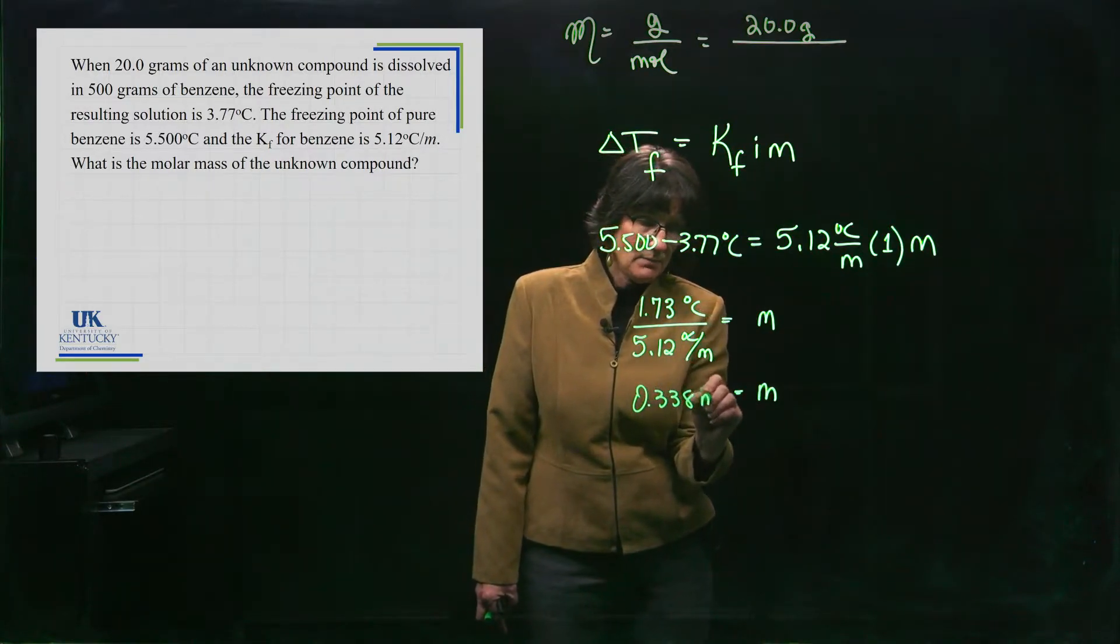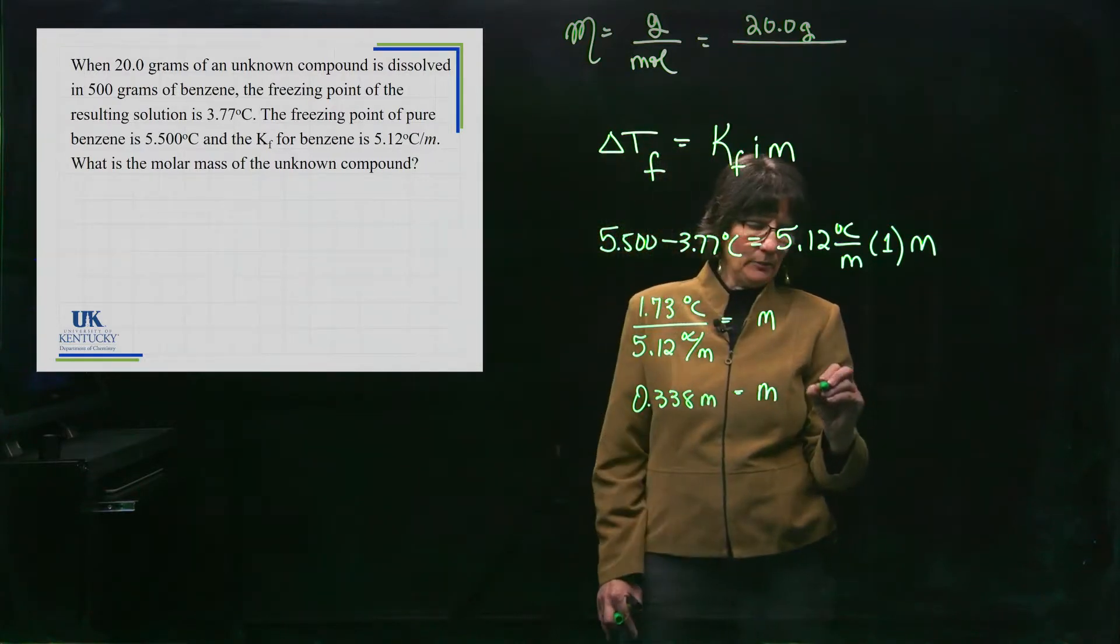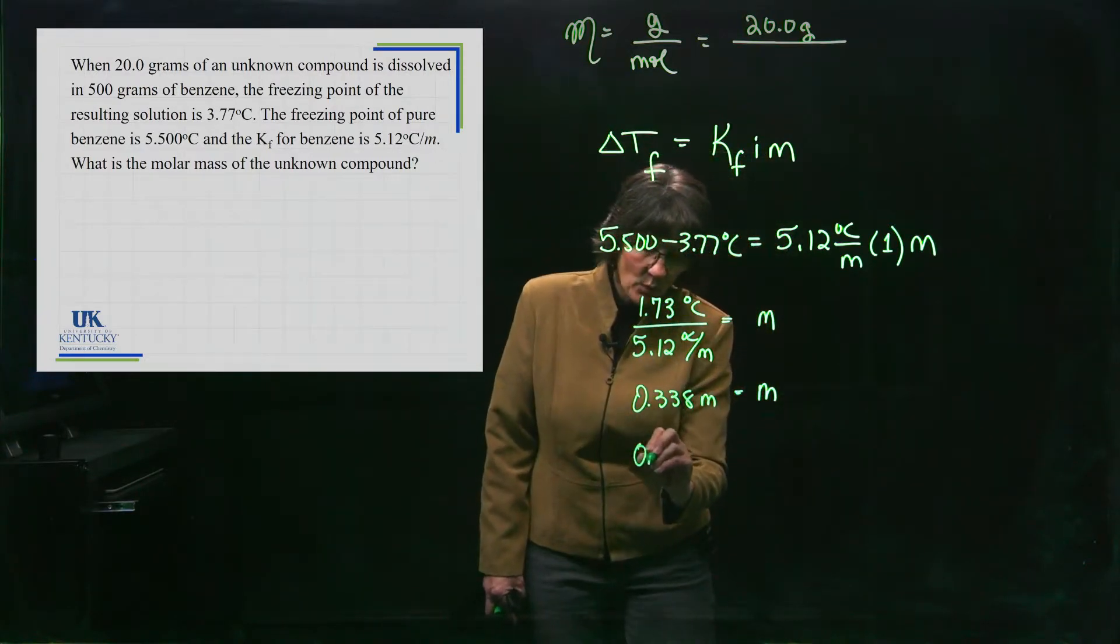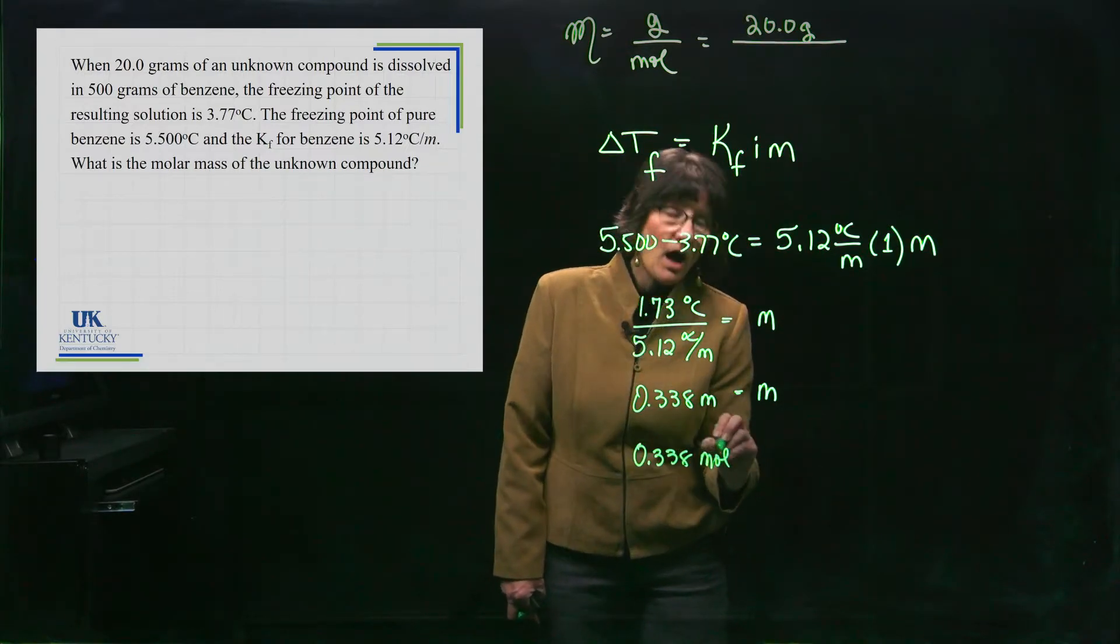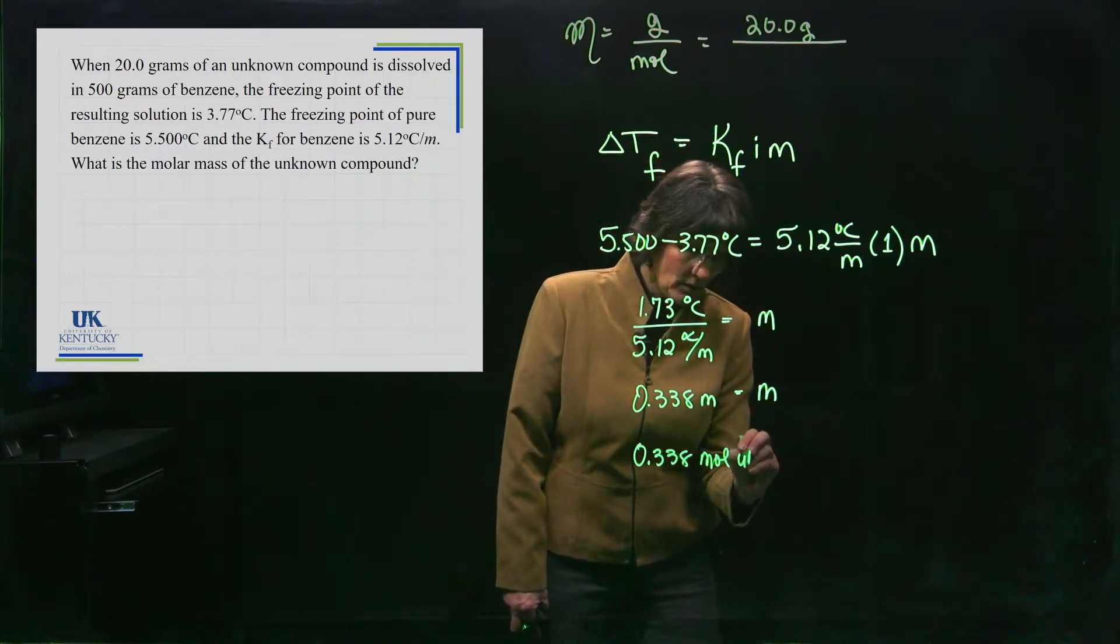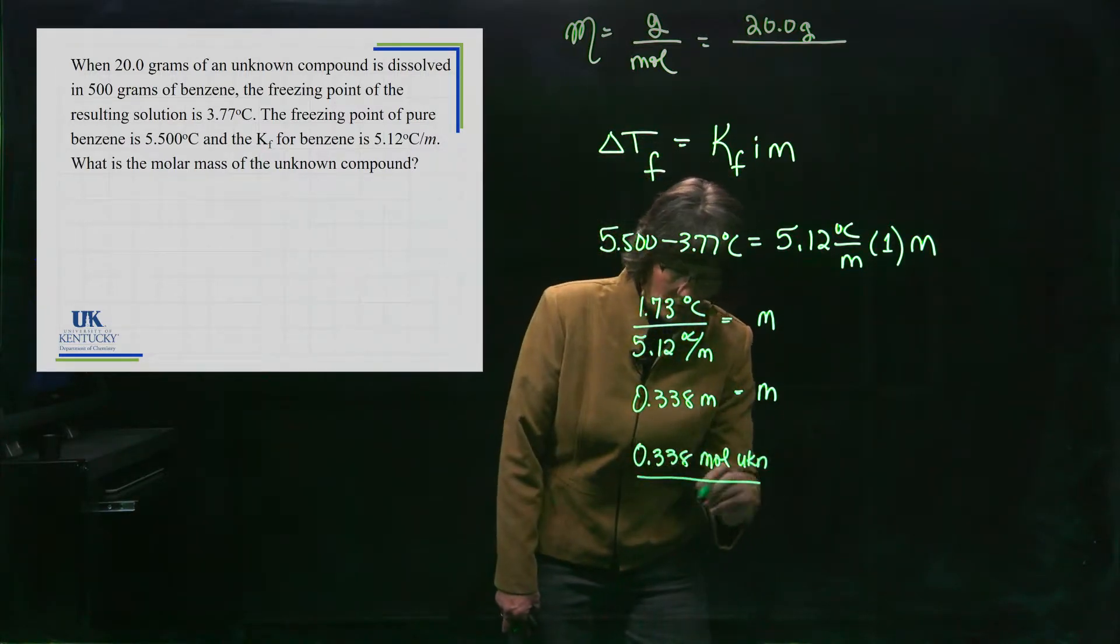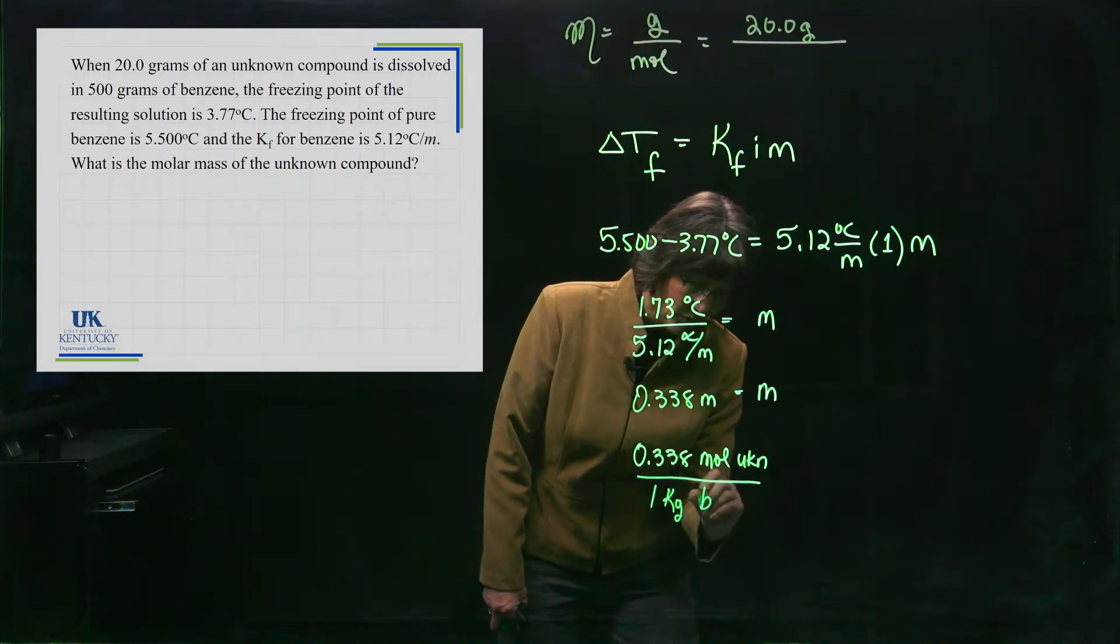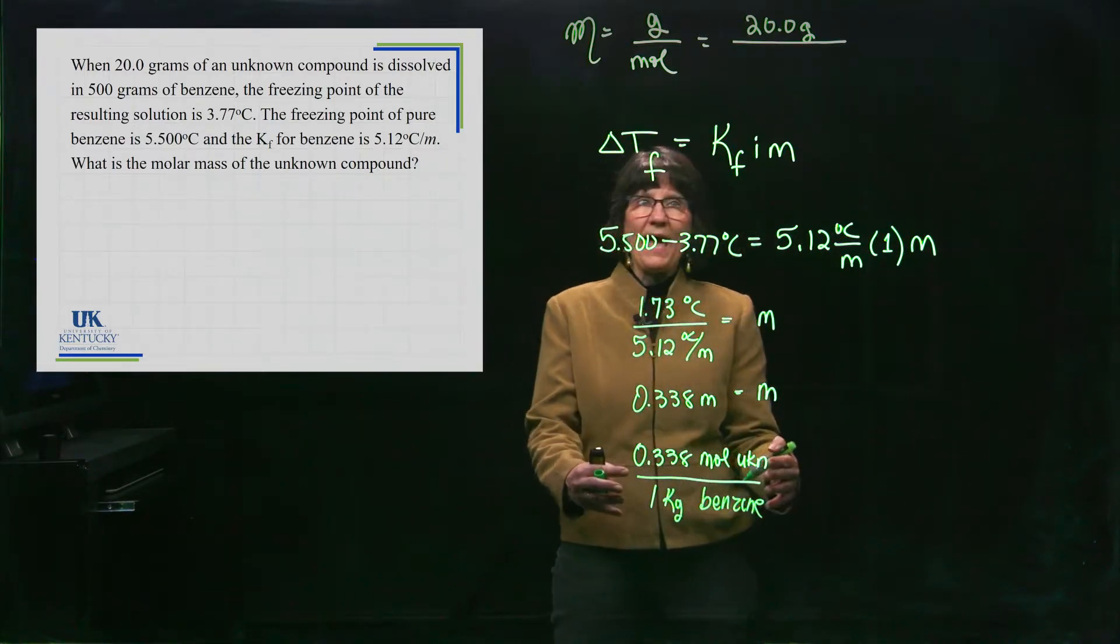Now, this is molal. That's what comes out. But what is molal? Let's expand that out a little bit. Molal is 0.338 moles of my unknown, I'll call it UKN for unknown, per kilogram of solvent. Now, this is what I have.